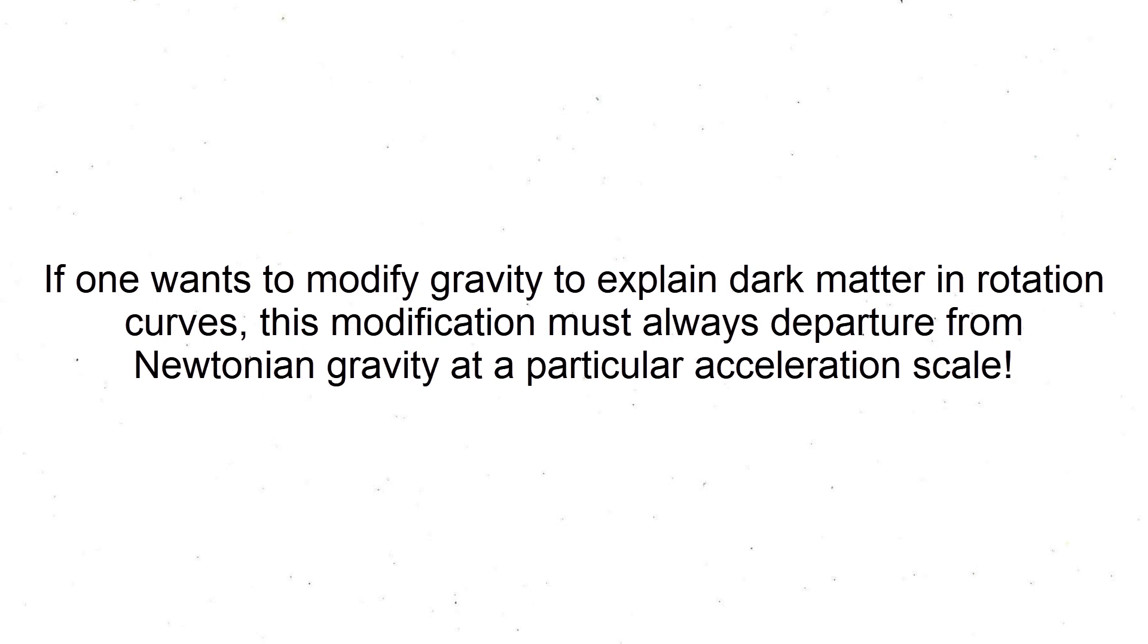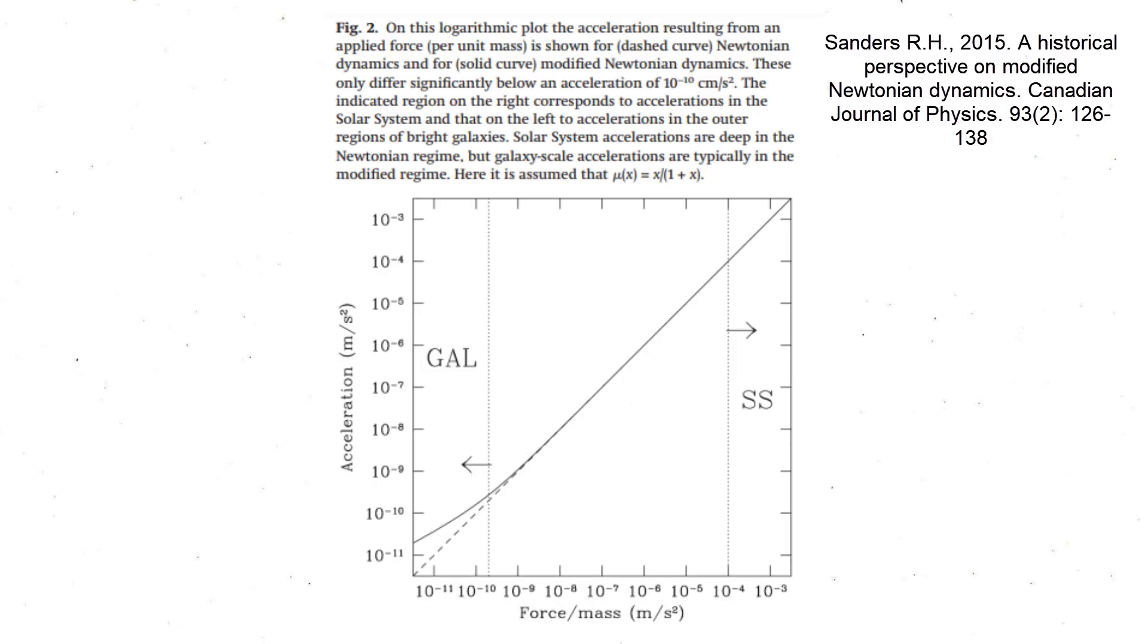It is a fact that if one wants to modify gravity to explain dark matter in rotation curves, this modification must always depart from Newtonian gravity at a particular acceleration scale. This is always correct and it is the true great achievement of MOND, without even stating how gravity must behave beyond this scale, apart from being stronger, because there are multiple choices for its interpolating function.